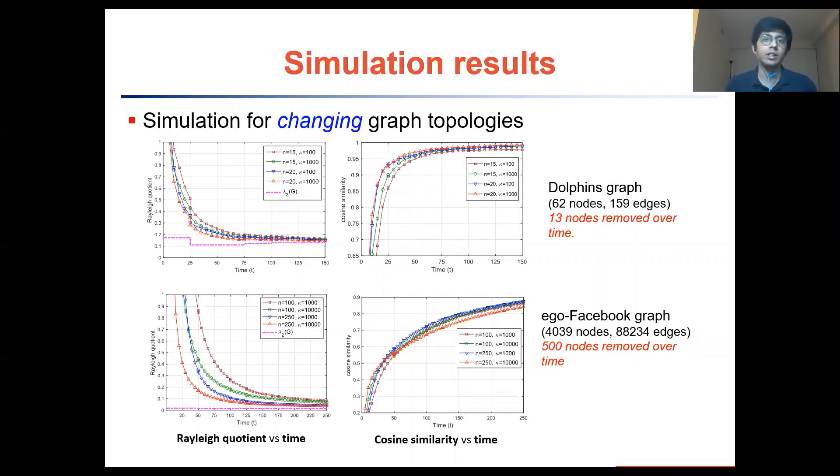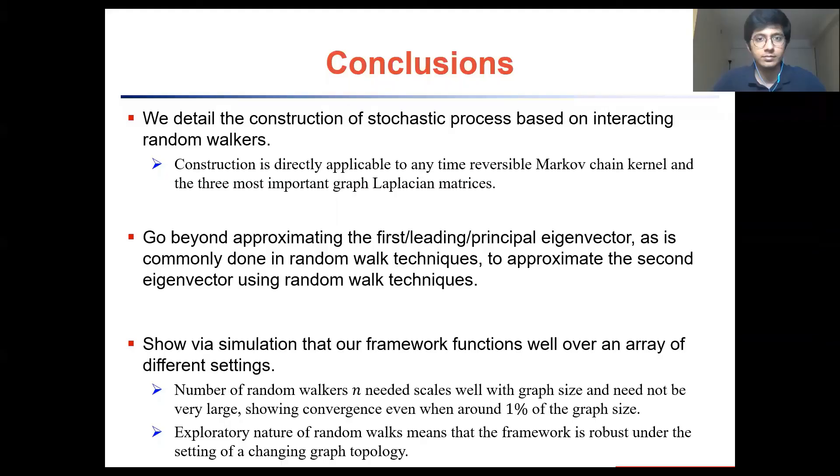We also simulate the case where the topology of the graphs changes dynamically. This is done by deleting nodes of the graphs over time while also maintaining the connectivity of the graph. This ensures that our framework stays on track and converges strictly over time to the Fiedler vector not deviating off course, and this also highlights the robustness of our framework even when the graphs are dynamic in nature.